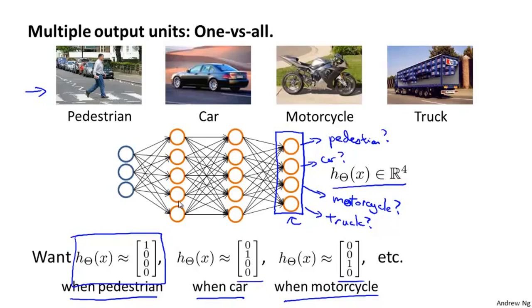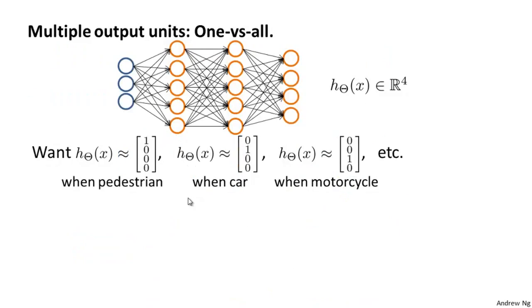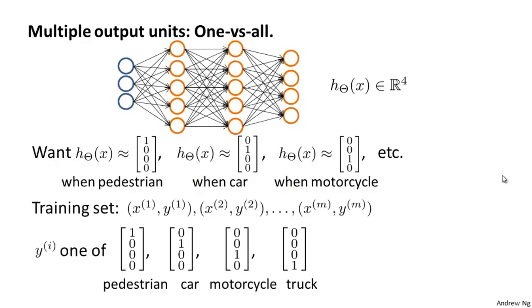So rearranging the slide a bit. Here's our neural network with four output units, and those are what we want h of x to be when we have the different images. And the way we're going to represent the training set in these settings is as follows. So when we have a training set with different images of pedestrians, cars, motorcycles, and trucks.